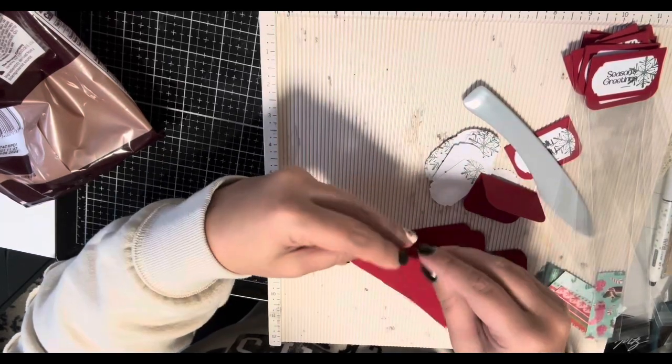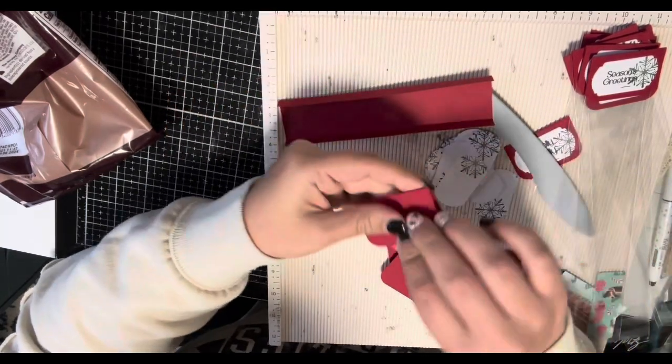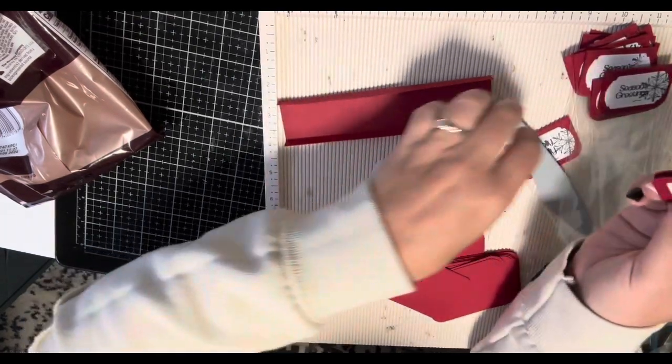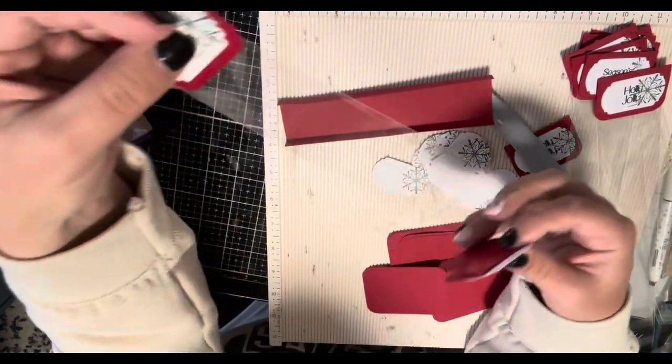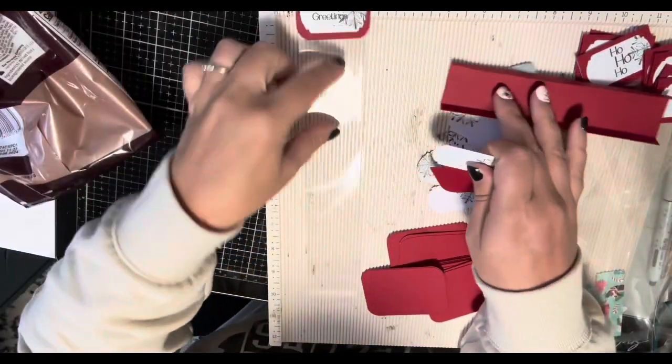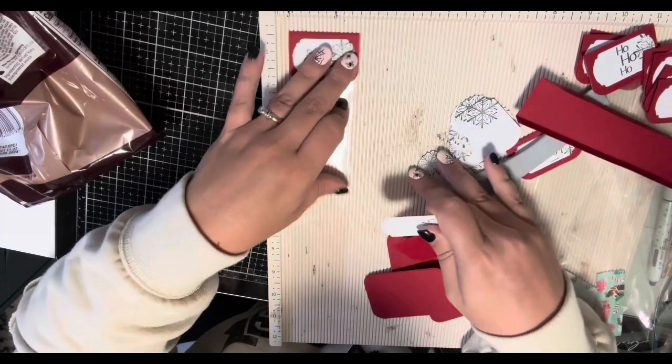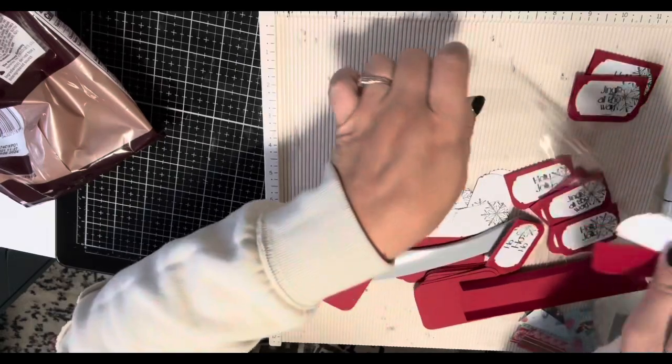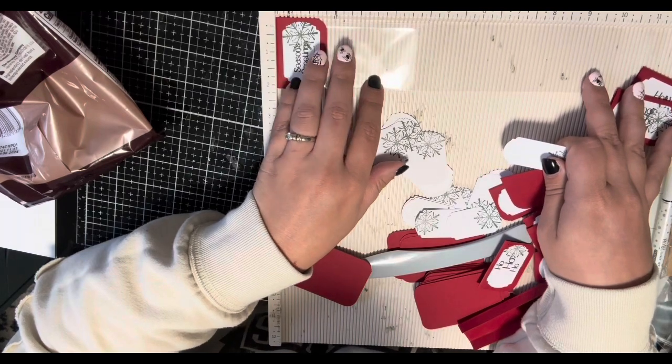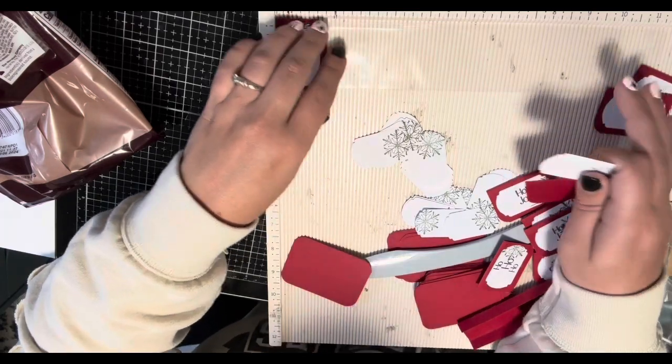Once I had my box scored and my bag topper scored and my sentiment on there, all I would do is glue down my tag, get my white clear bag that I got off of Amazon. These bags are right about 2 inches wide and about 11.25 inches long.